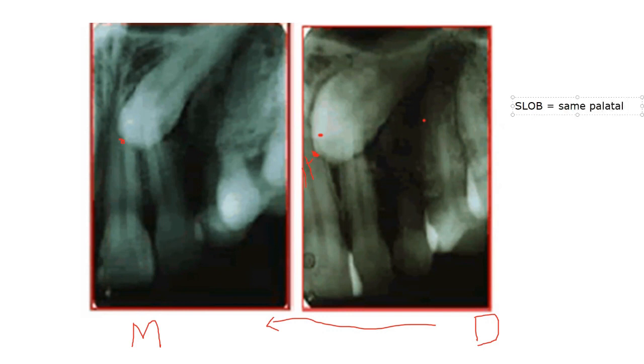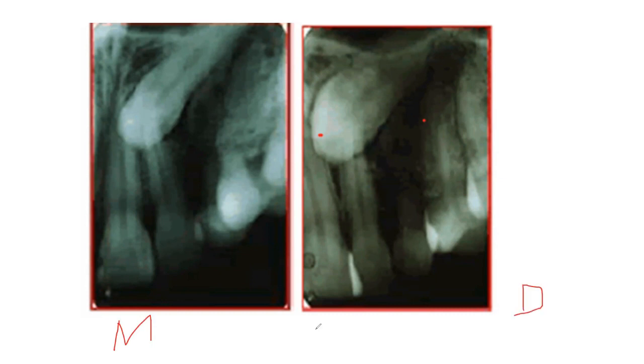Applying the SLOB rule — same palatal or lingual, opposite buccal — since the canine moves in the same direction as the beam, the canine is on the buccal side. This conclusion holds whether you analyze the movement from distal to mesial or from mesial to distal; the canine tip moves in the same direction as the beam, confirming buccal placement.